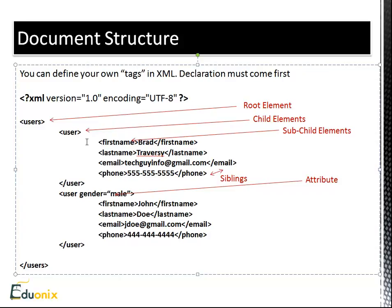Inside the child elements we have sub-child elements. You can keep going — there's no restriction on depth, but it should be readable. These child elements include first name, last name, email, and phone number. The relation between these tags — first name, last name, email, and phone — these are siblings because they're on the same level. The user element is a parent of these elements, just as the root element is a parent for all elements. Down here you can see I have a user tag with 'gender equals male' — this is an attribute. Just like in HTML, we have the attribute name and then an equal sign with the value.